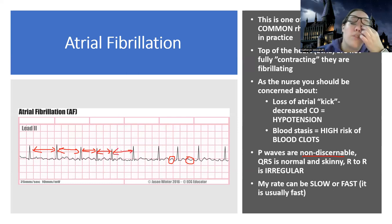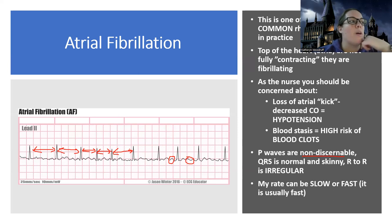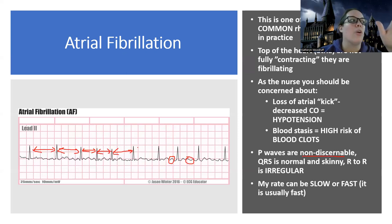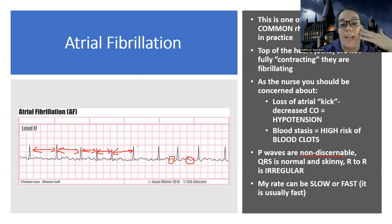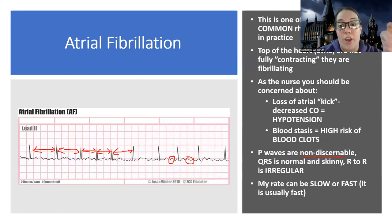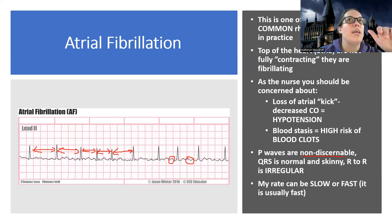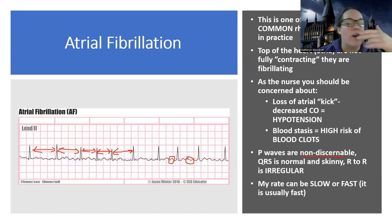They actually call atrial fibrillation 'regularly irregular' — I can depend on it being irregular. It's not predictable. The top of the heart is fibrillating so much that the bottom of the heart doesn't get the signals it needs, so it's not going to be in sync. This rhythm can be slow, but a lot of times it ends up being fast — what we call AFib with RVR, or rapid ventricular rate, where the bottom of the heart starts beating faster to try to compensate for the loss of cardiac output.